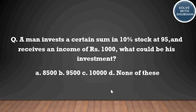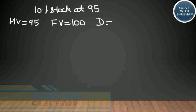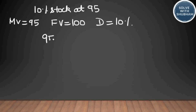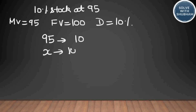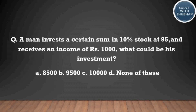Next question: A man invests a certain sum in 10 percent stock at 95 and receives an income of rupees 1000. What is his investment? For a 10 percent stock at 95, the market value is 95 and face value is 100. Dividend is 10 rupees per share. Investing x rupees gives income of 10x/95 = 1000, so x = 9500. The answer is option B: the investment is rupees 9500.